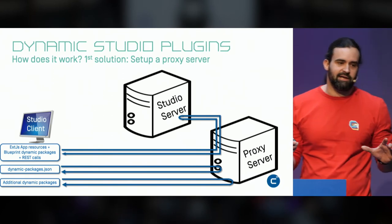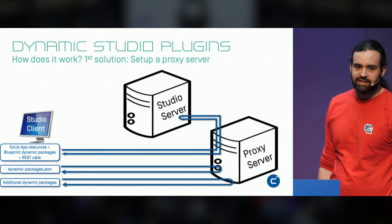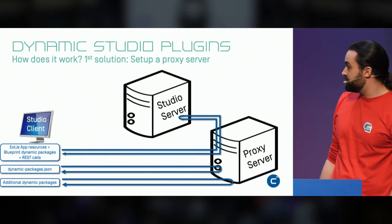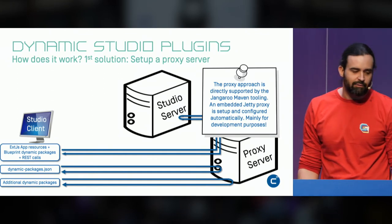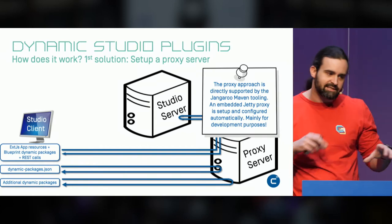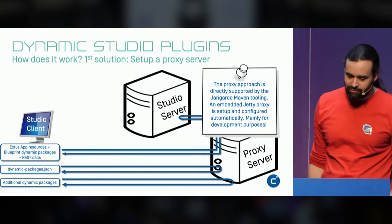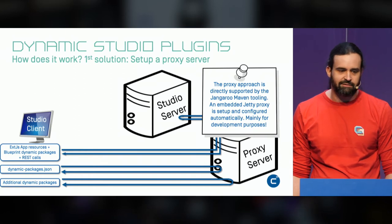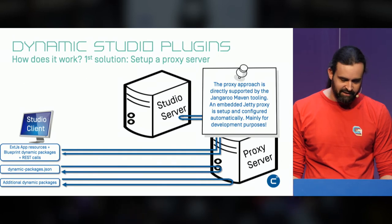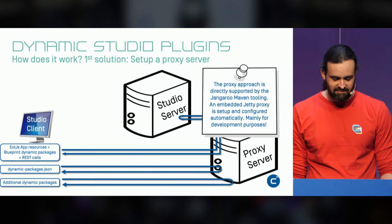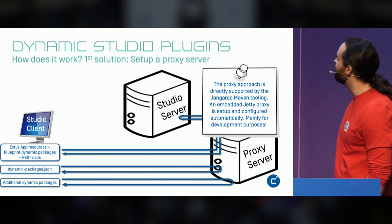For the client it appears to be a whole new studio application, but the blueprint server is completely unchanged. With dynamic packages this works like a charm — you can have a mothership studio with proxies branding it differently or adding functionality for different tenants. For development purposes, we've built this proxy solution into our Jangaroo tooling: the Jangaroo run goal can work with a remote studio server and some local dynamic packages, setting up an embedded Jetty that does the proxying. For production, you'd set up a real proxy server.